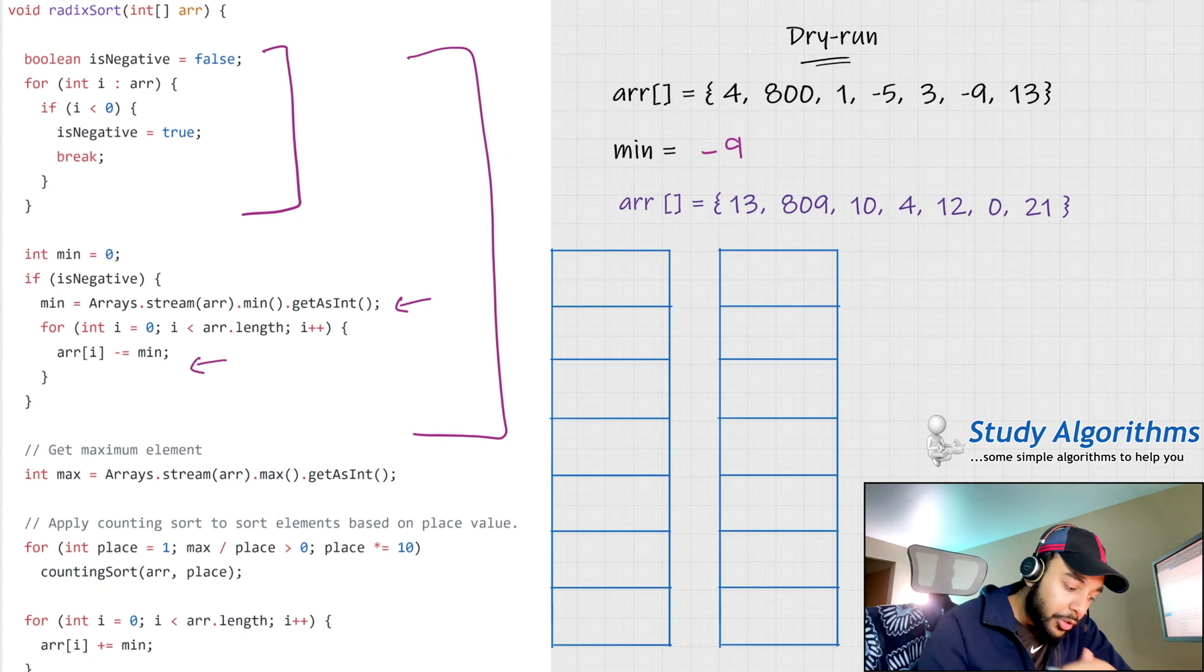So, you see, when I added 9 to each of the elements, my array changed back to all positive numbers. Now, you can simply perform Radix sort on this, right? So let me just copy down all of these values in my first step.